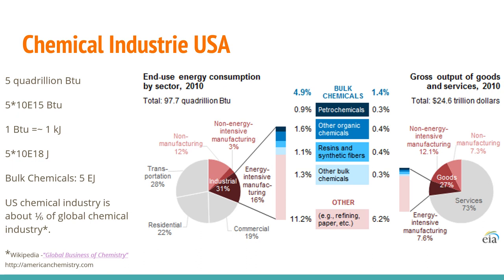The chemical industry eats up a lot of energy for very different processes: organic resins, synthetic fibers, bulk chemicals, and more. Looking at the global energy demand and the fraction going into energy-intensive manufacturing, the chemical sector accounts for about 4.9% of global energy — making it one of the largest industrial energy consumers.